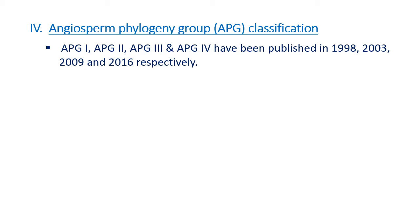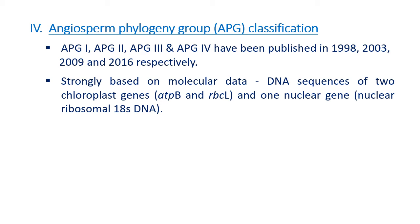The Angiosperm Phylogeny Group classification is the modern and most recent one. APG 1, 2, 3, and 4 have been published so far. These classifications are strongly based on molecular data like DNA sequences of two chloroplast genes and one nuclear gene.